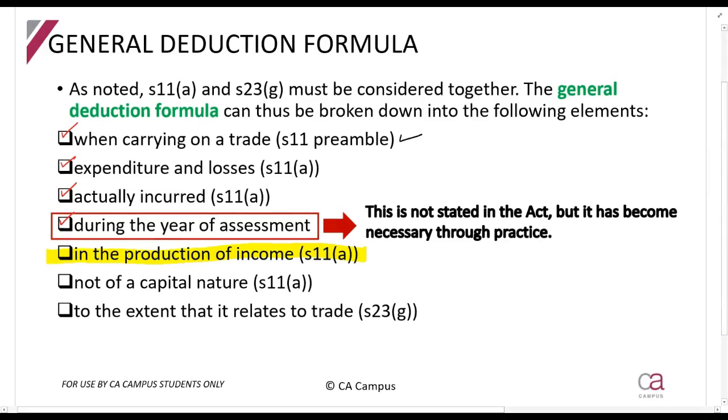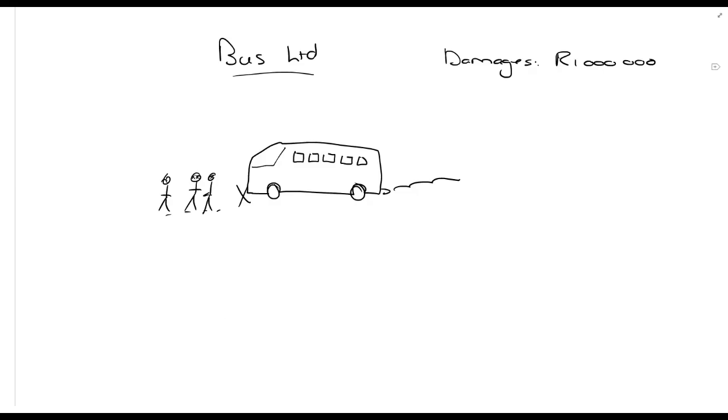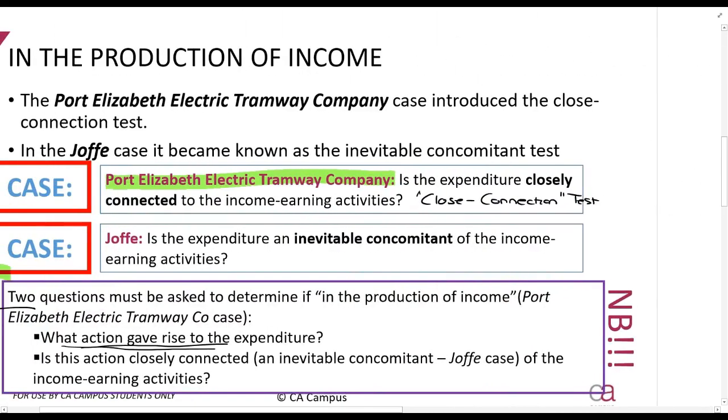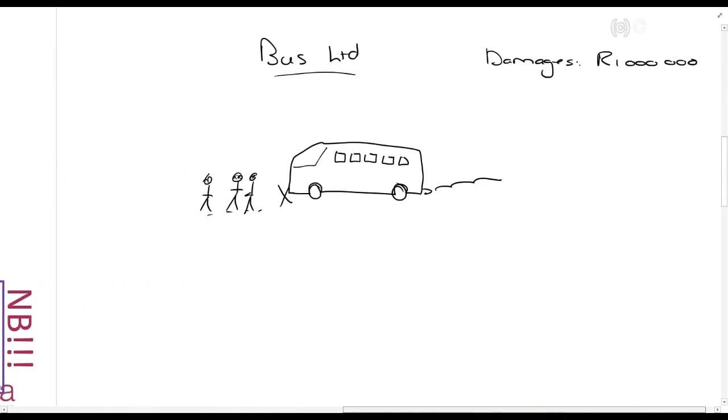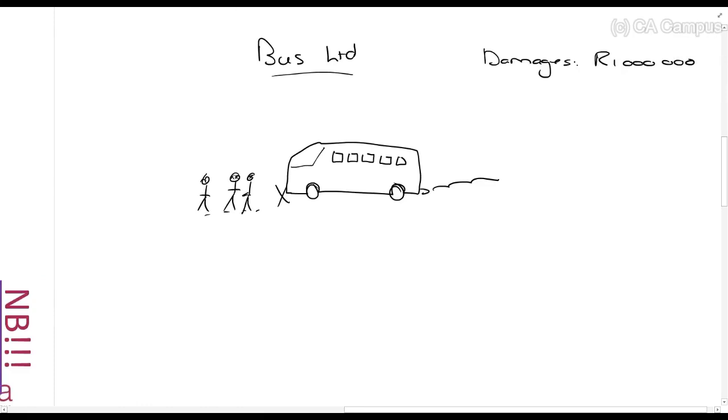Now, we are carrying on a trade. It is an expense or a loss that was actually incurred, because the court said we must pay, we've got a legal obligation, during the year. Is it in the production of income? The question that we have to ask ourselves is, what action gave rise to the expenditure? The bus driver was involved in an accident, people were injured or killed, and therefore, there was damages we had to pay. Is that action, this bus accident, closely connected to our income-earning activities, an unavoidable part, a necessary part? We would like to think it's not necessary, but, unfortunately, what do we know about accidents, and buses, and vehicles? It happens. Can we say that it's a part of our business? Absolutely. This is in the production of income, and you will be allowed to claim that as a deduction.